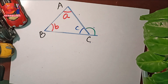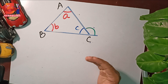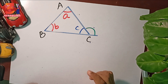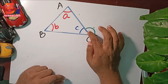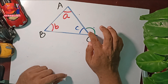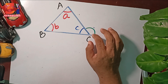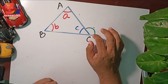Assalamualaikum. I am going to talk about the exterior angle. The angle created by one side of a triangle and the subsequent extended side is known as the external angle of a triangle.